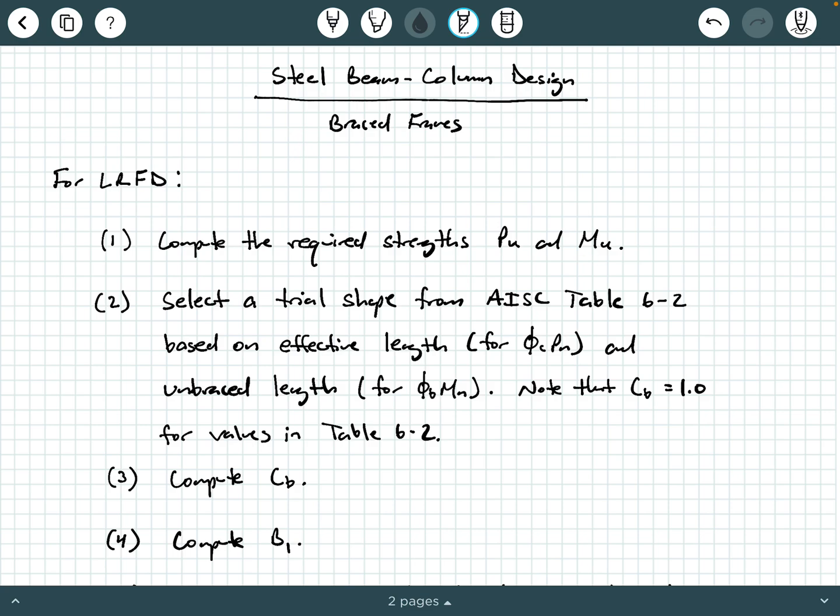Step two, remember you're designing a beam column right now, so you currently don't know what the section is. You don't know if it's a W12 or W10, whatever. You're selecting it. So we're going to enter into the steel manual, AISC steel manual table 6-2, which we've used before in previous videos. And we're going to select a trial shape from this table based on our effective length, which is going to tell us something about the axial compressive strength, phi C PN.